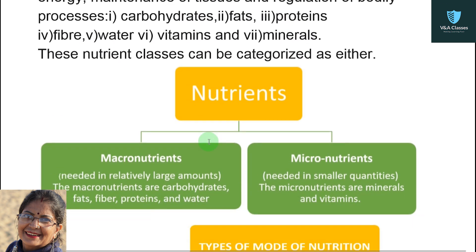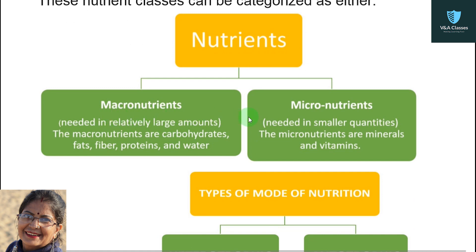These seven nutrients are categorized into two groups: first, macronutrients, and second, micronutrients. Macronutrients are nutrients that are needed in large amounts. Micronutrients are nutrients needed in smaller quantities. The macronutrients are carbohydrates, fats, fibers, proteins, and water. The micronutrients are minerals and vitamins.